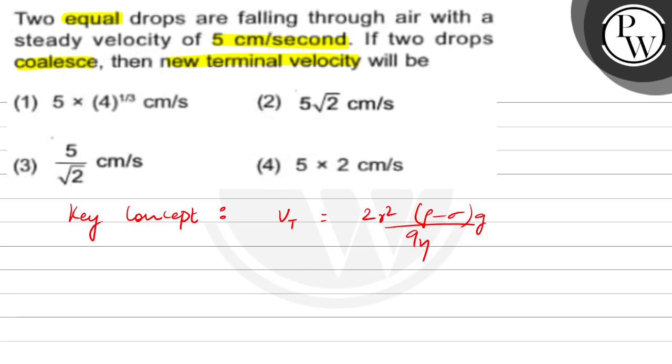R is radius of the object. Rho is density of the object. Sigma is density of the medium. G is acceleration due to gravity. Eta is viscosity of the medium.